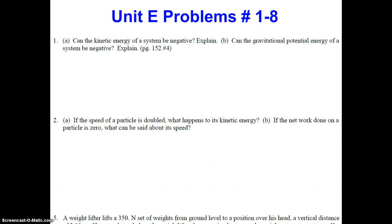For A, let's start out with the equation to calculate kinetic energy, which is K = ½mv². By analysis we can see: one, that mass is always positive because it's a scalar quantity — it's just an amount of matter. And v could be positive or negative, but it's squared, so even if velocity is negative, we end up multiplying a positive by a positive. Therefore kinetic energy will always be a positive value.